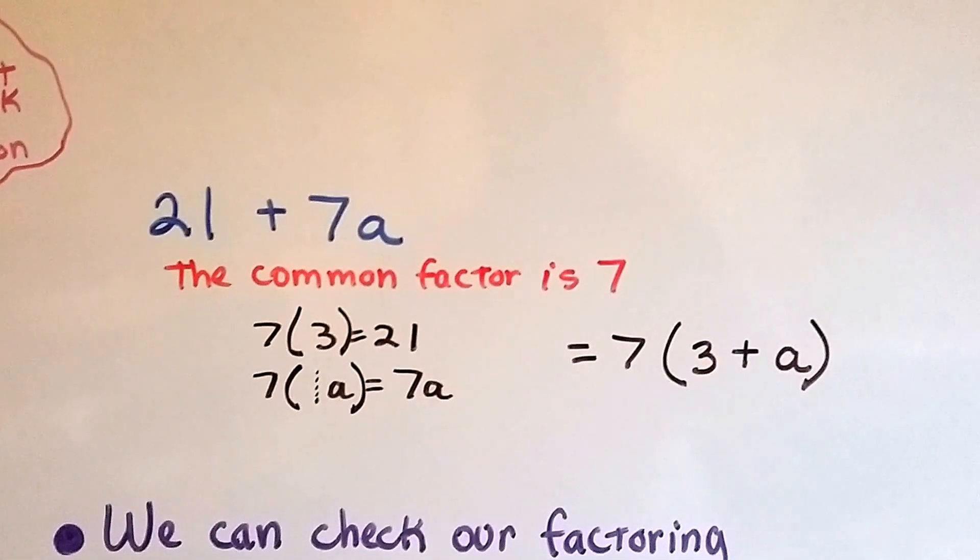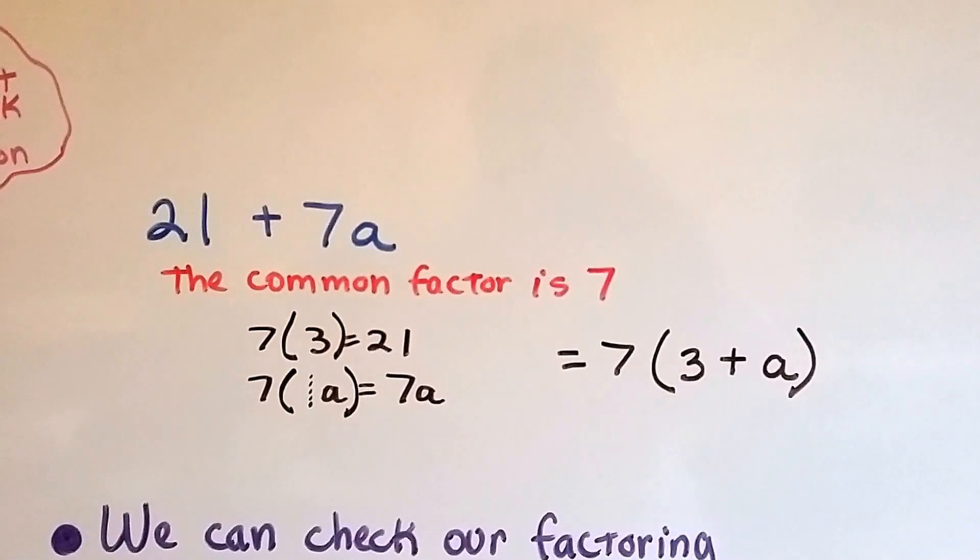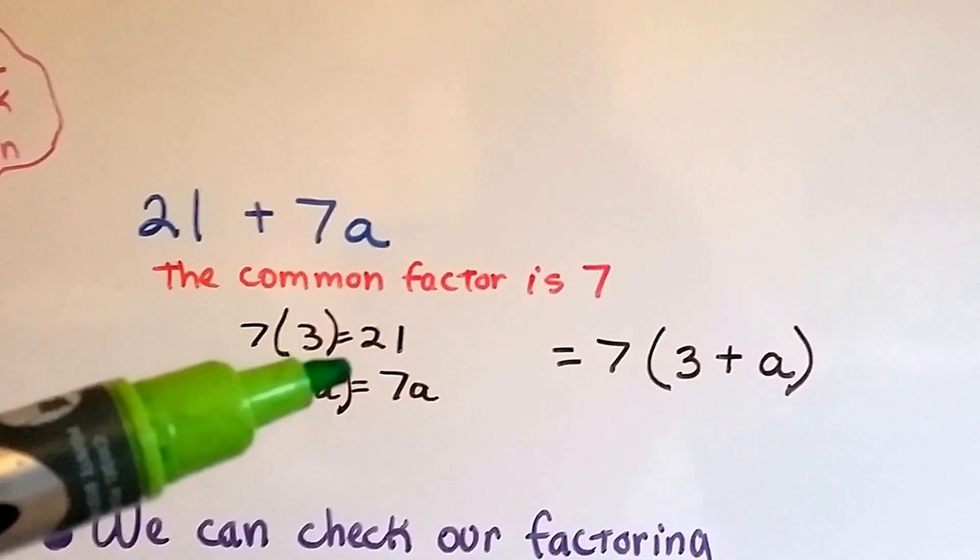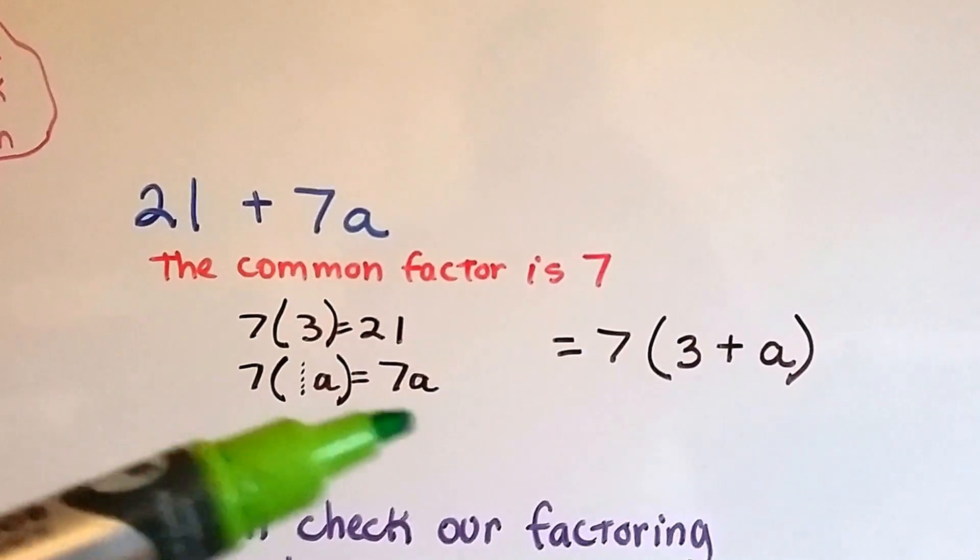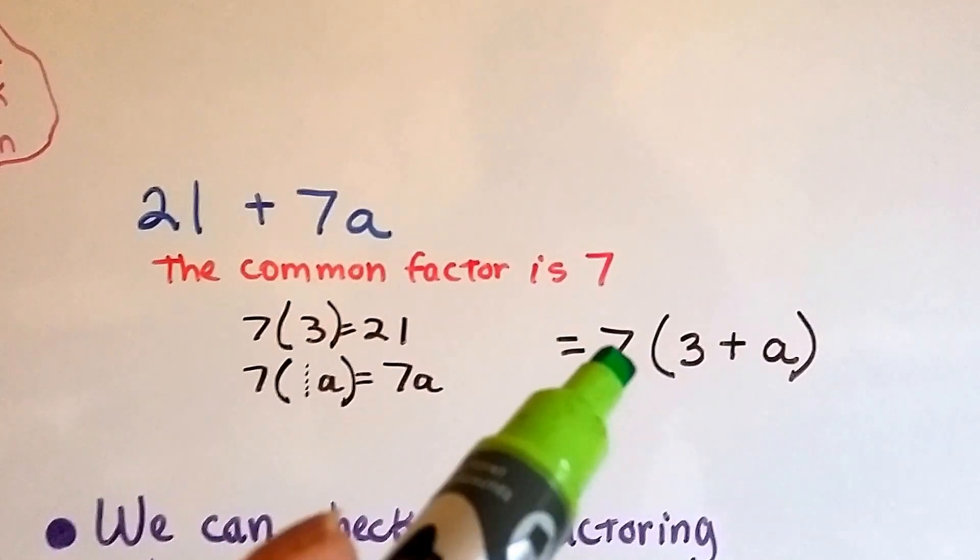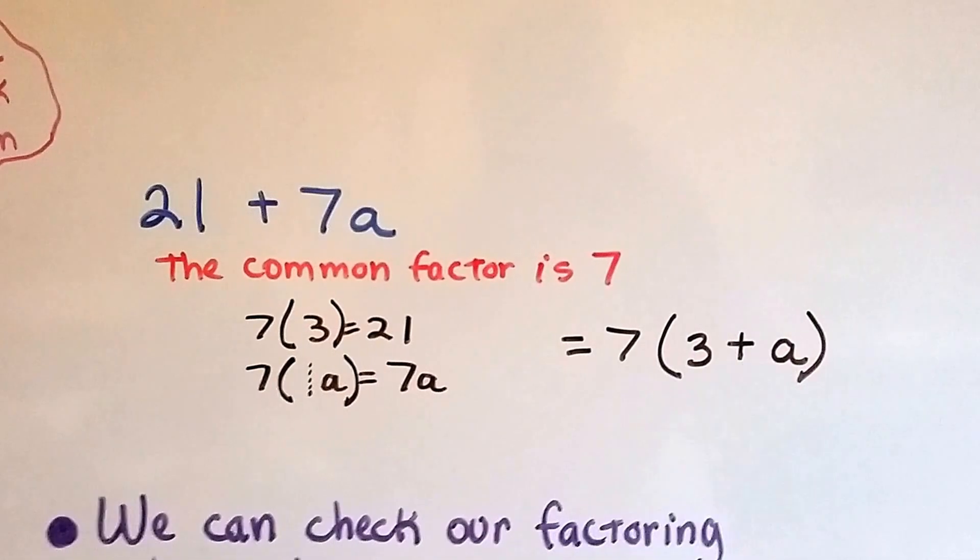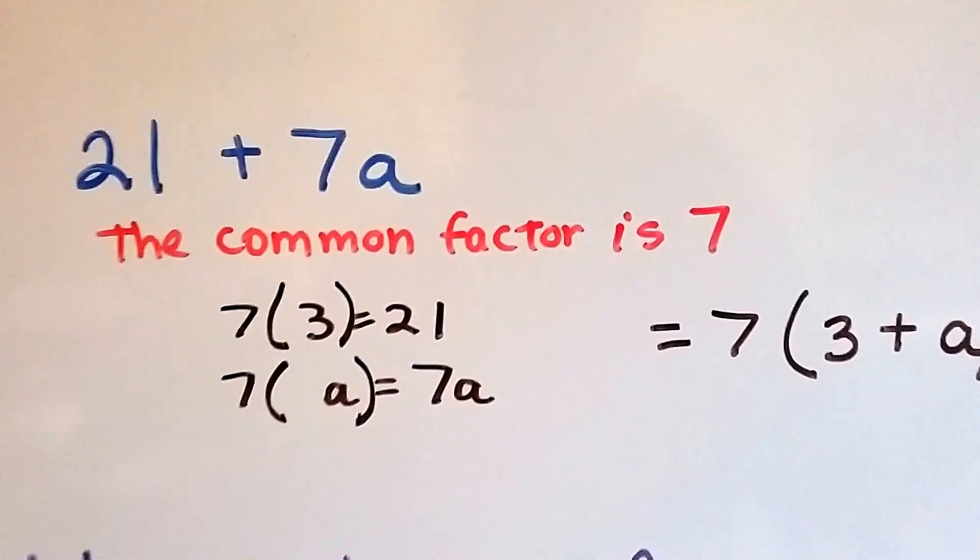One more time. We have 21 plus 7a. Well, the common factor between a 21 and a 7 is 7. So we've got 7 times 3 is 21, and 7 times an a will get a 7a. There's our friend, the invisible one. So we know that 7 goes on the front, outside the parentheses, and a 3 plus an a goes on the inside. We don't need to write that invisible one. We just know he's there.